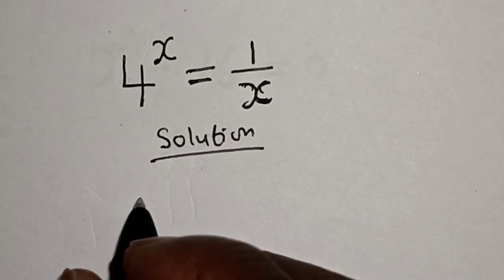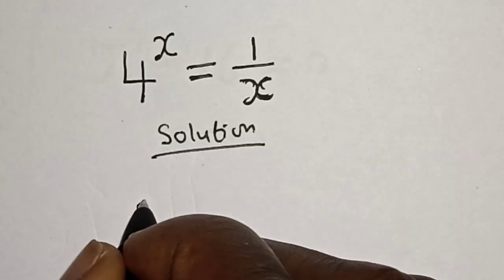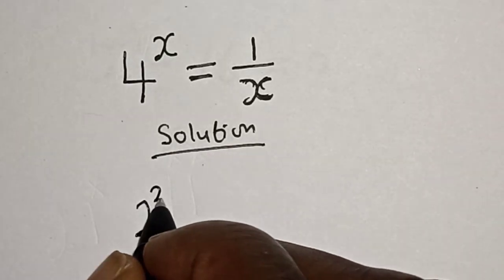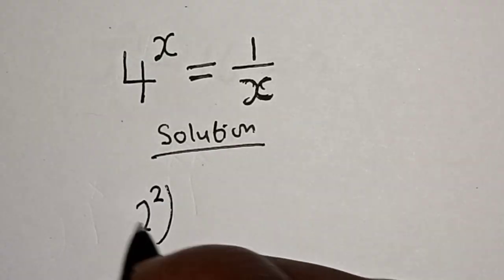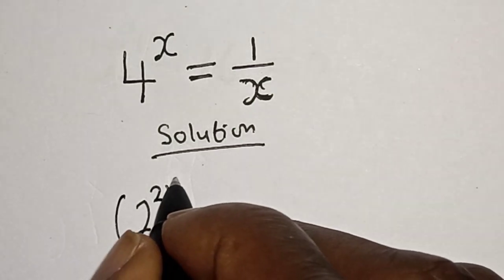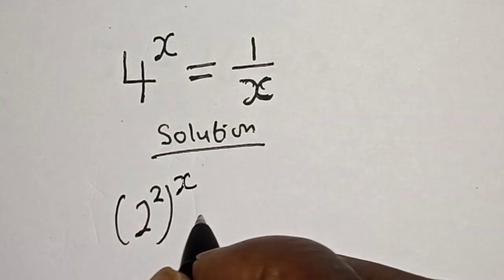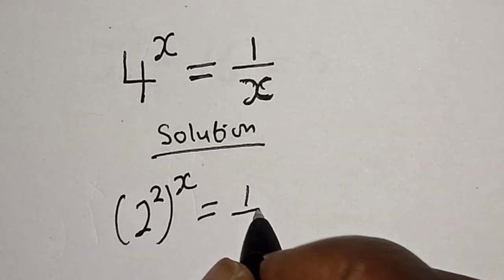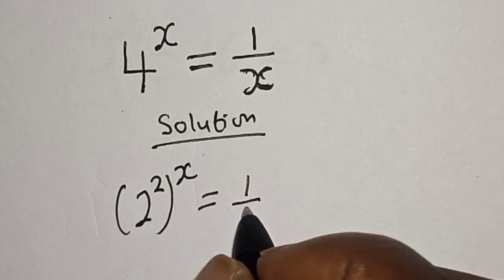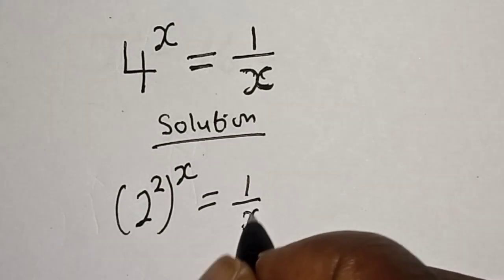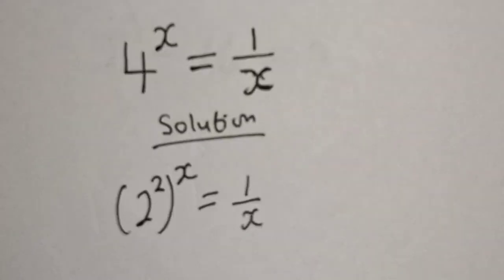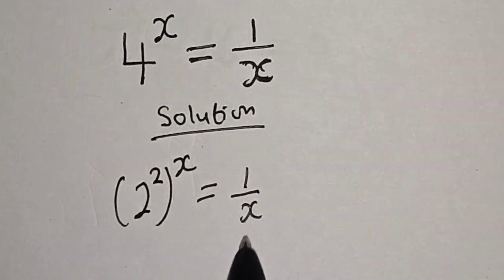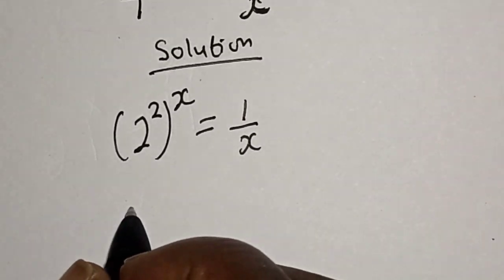4 raised to the power of x can be written as 2 raised to power 2, raised to power x, is equal to 1 over x. Let's multiply the power of both sides by 1 over x.